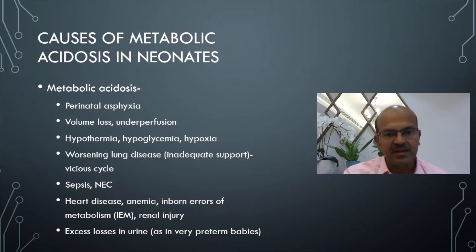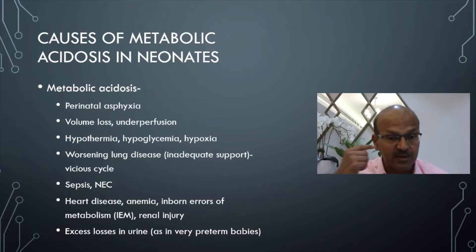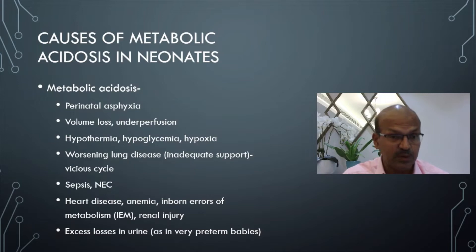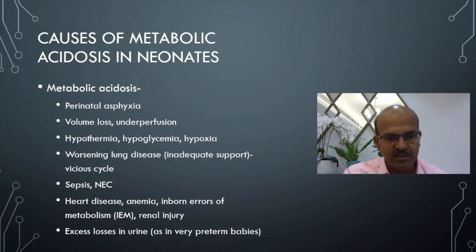Anemia — if there is reduced oxygen-carrying capacity, acid can build up because less oxygen reaches the tissues, and both the heart and respiratory system have to work harder. Inborn errors of metabolism will be discussed in the next slide; there is already a video on the channel covering this topic.